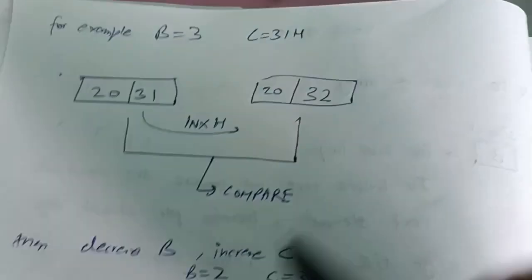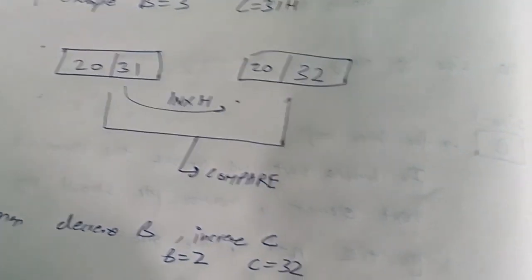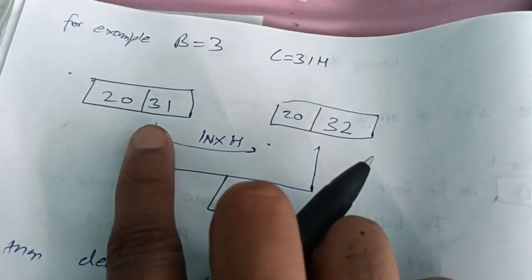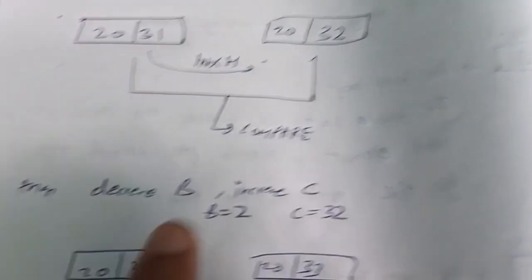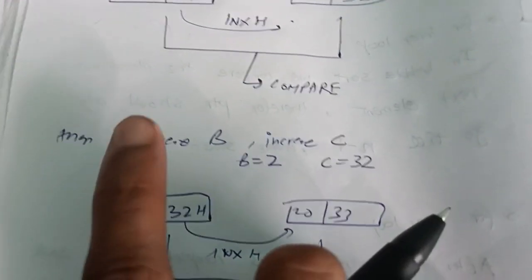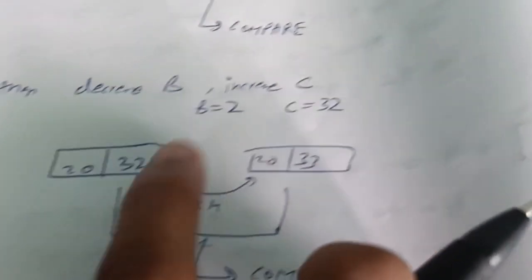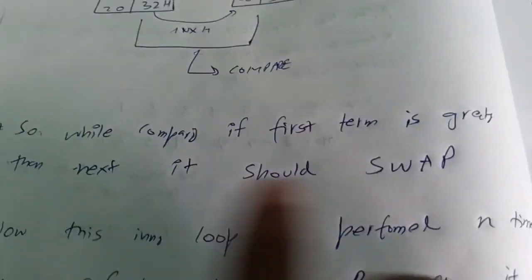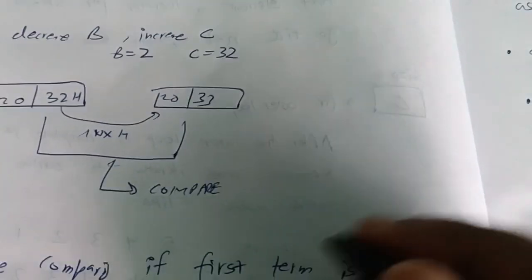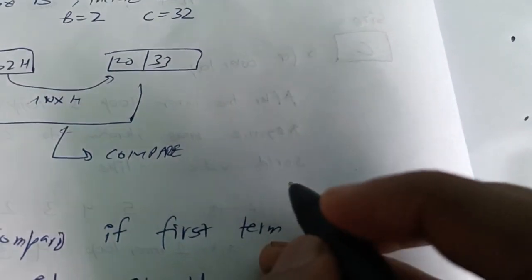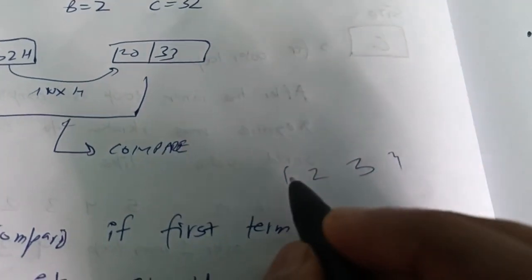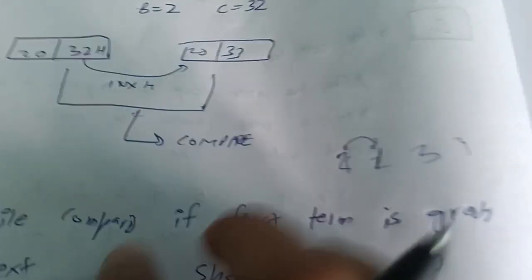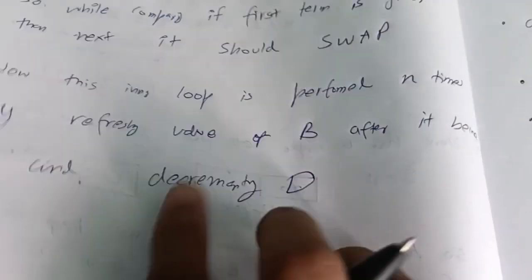To get the next element we use INX H, which increments the HL pair. So if we are at 2031 we compare 2031 and 2032. In the next iteration C becomes 32, and INX H gives us 2032 and 2033, continuing until B equals zero. If the first element is greater than the next we should swap, since we are aiming for ascending order — 1, 2, 3, 4 and so on.